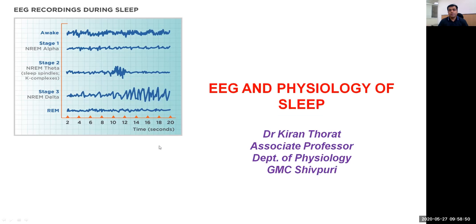Then we saw what is the neural basis for the generation of these waves of the electroencephalogram. We studied the definition of sleep, which is nothing but a temporary and reversible state of unconsciousness from which a person can be aroused. Depending on eyeball movements, sleep is divided into two categories: REM sleep and NREM sleep or slow wave sleep, which we discussed in detail.